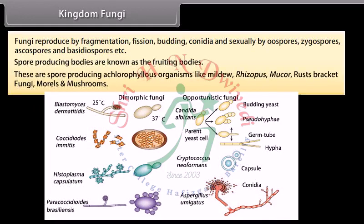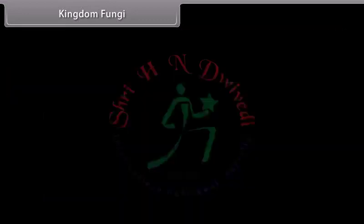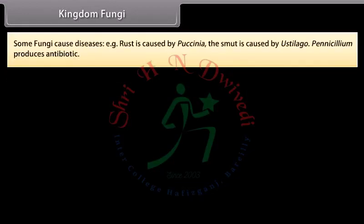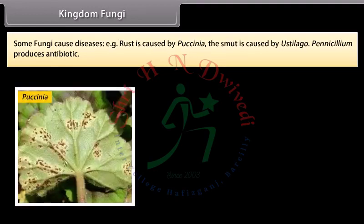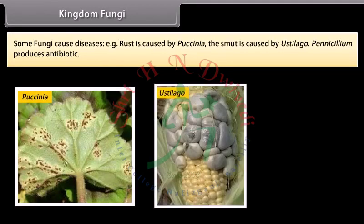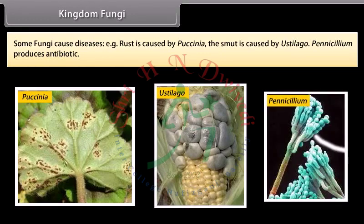Spore-producing bodies are known as fruiting bodies. Fungi are spore-producing achlorophyllous organisms like mildew, Rhizopus, Mucor, rusts, bracket fungi, morals, and mushrooms. Some fungi cause diseases — for example, rust is caused by Puccinia, smut is caused by Ustilago, and Penicillium produces an antibiotic.